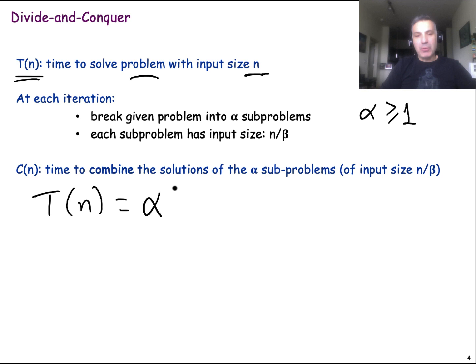Each of those sub-problems will have a certain size. Let's say that the size of each of the sub-problems is n divided by beta, where beta is larger than 1, so that we actually reduce the input size of the sub-problems. So we are solving alpha sub-problems, each of them with input size n over beta.